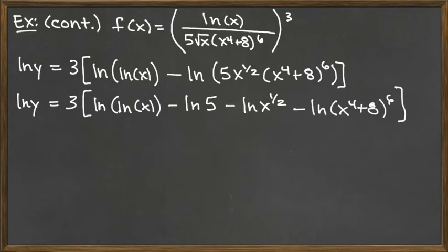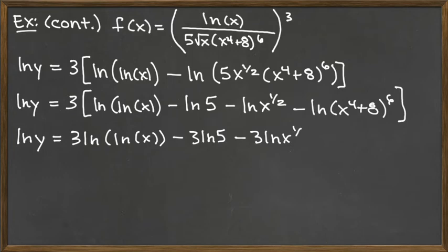So I still do have this 3 out front that perhaps I would like to go ahead and distribute now that I have broken up into sums and differences as much as possible. So I've got 3 natural log of natural log of x minus 3 natural log of 5 minus 3 natural log of x to the 1 half minus 3 natural log of x to the 4th plus 8 raised to the 6th power.